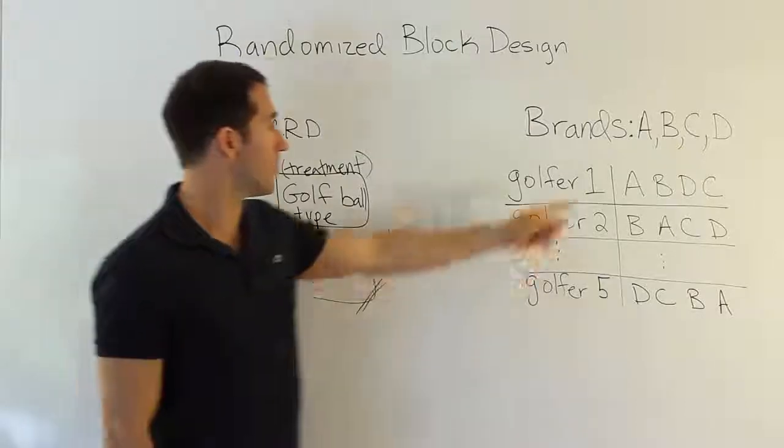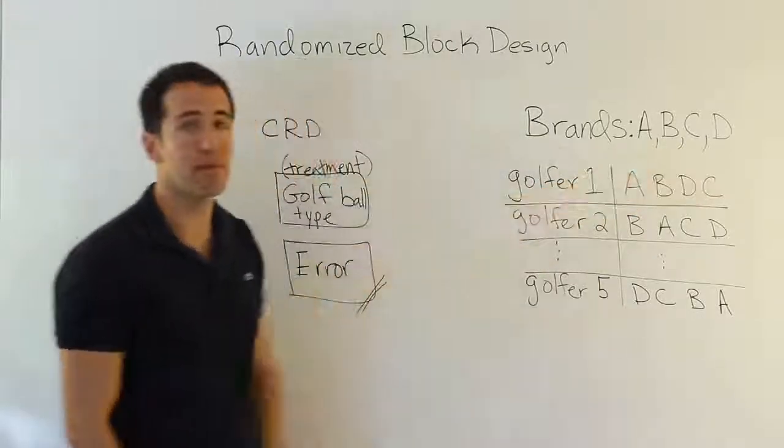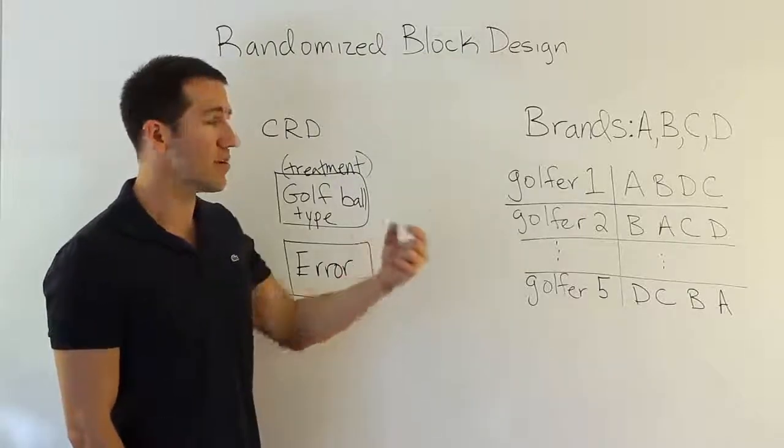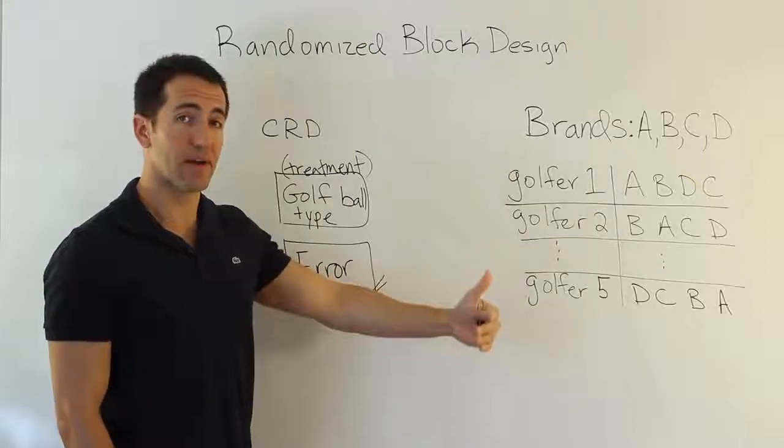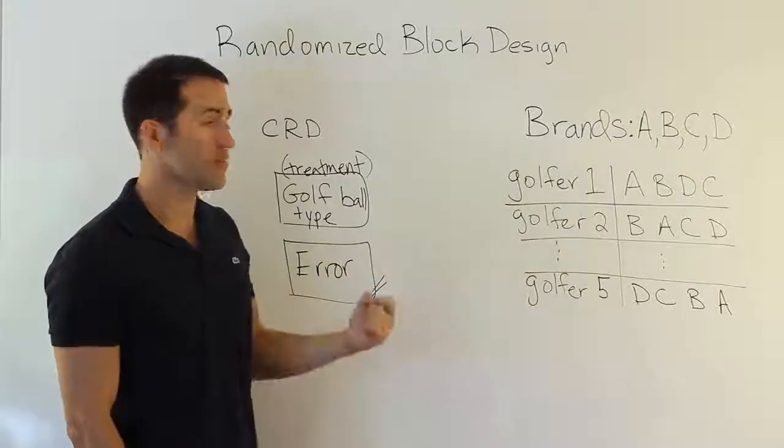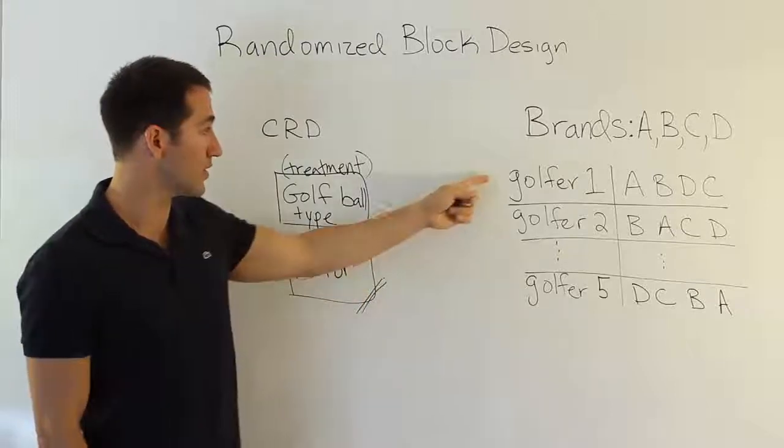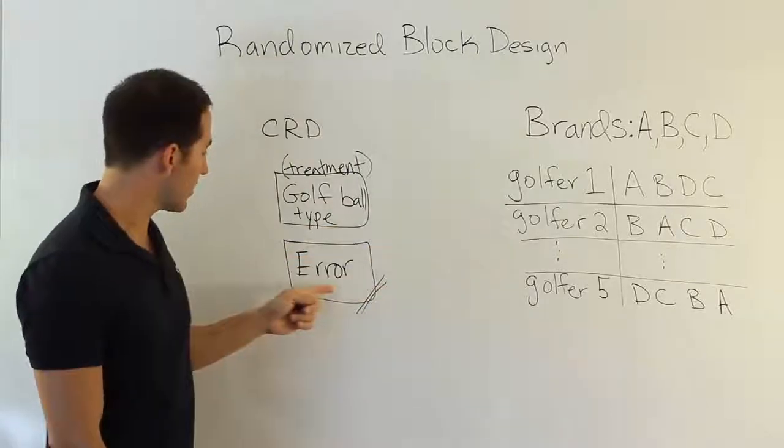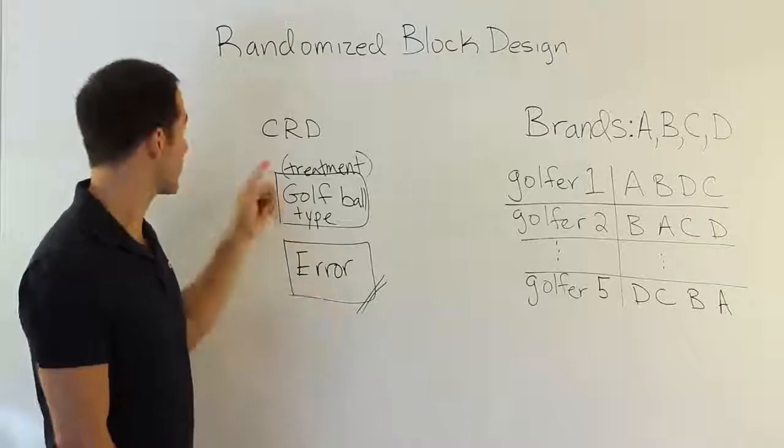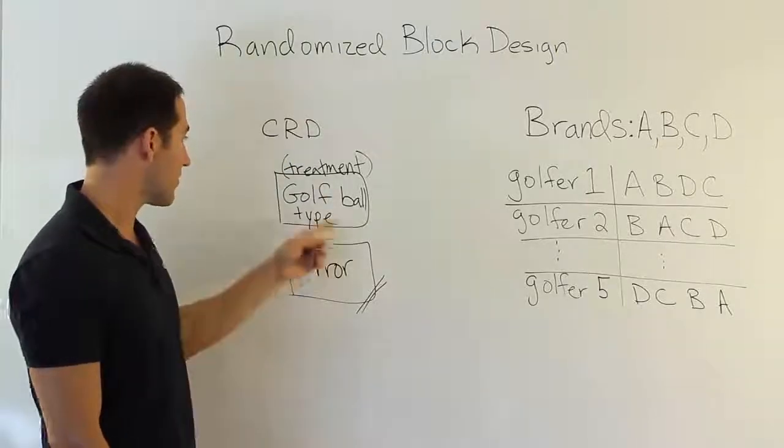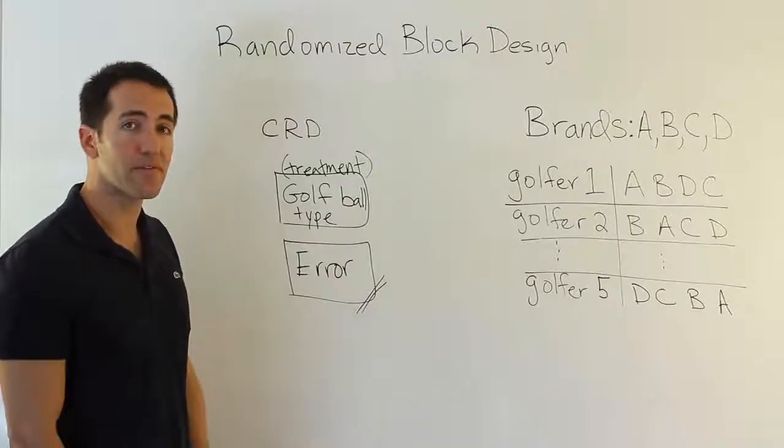Aren't these four golf balls going to generally probably travel pretty much almost the same distances? We might be able to detect small differences between them and say, yes, one of them is truly better consistently. But those differences probably are not going to be huge. They probably won't be as large as the differences between the golfers themselves. It is all going to be thrown into this error term under a completely randomized design experiment. In that situation, we're probably going to have a very hard time showing that these balls are different at all from one another.